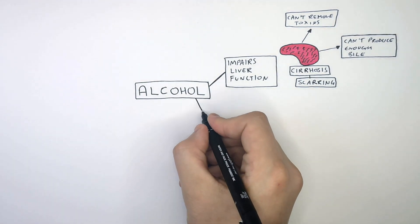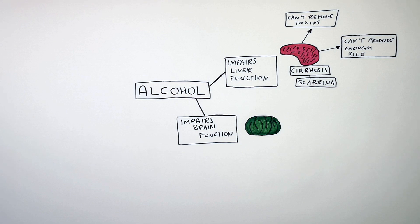Alcohol will also affect the brain. It impairs your brain function, which means it reduces the effectiveness of your brain.